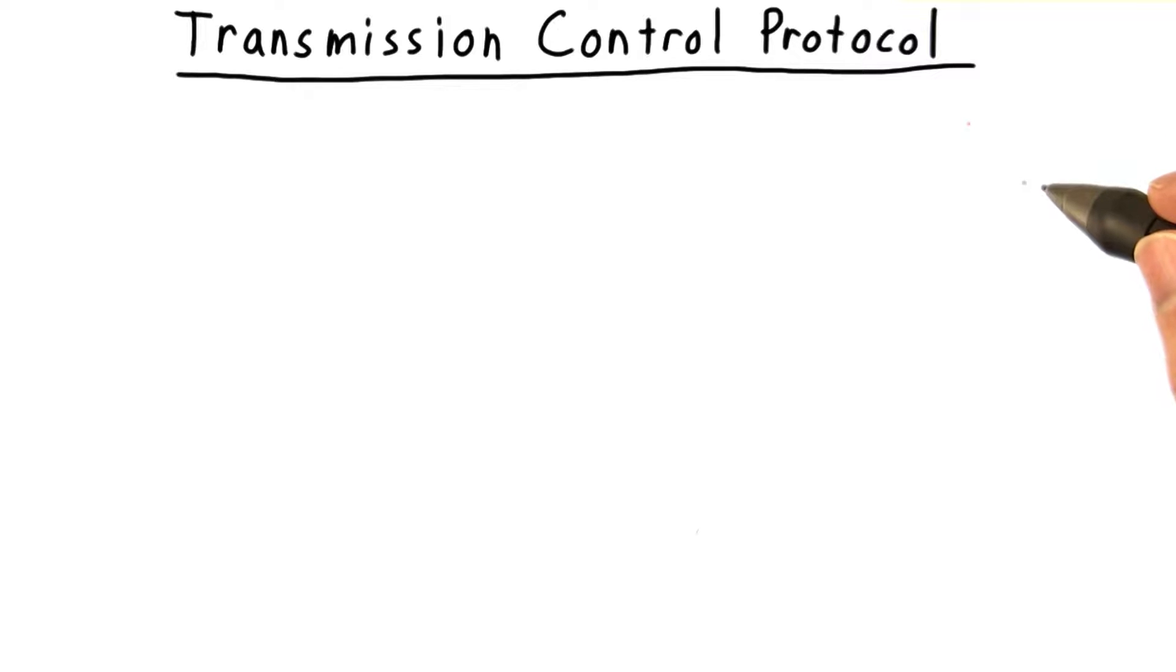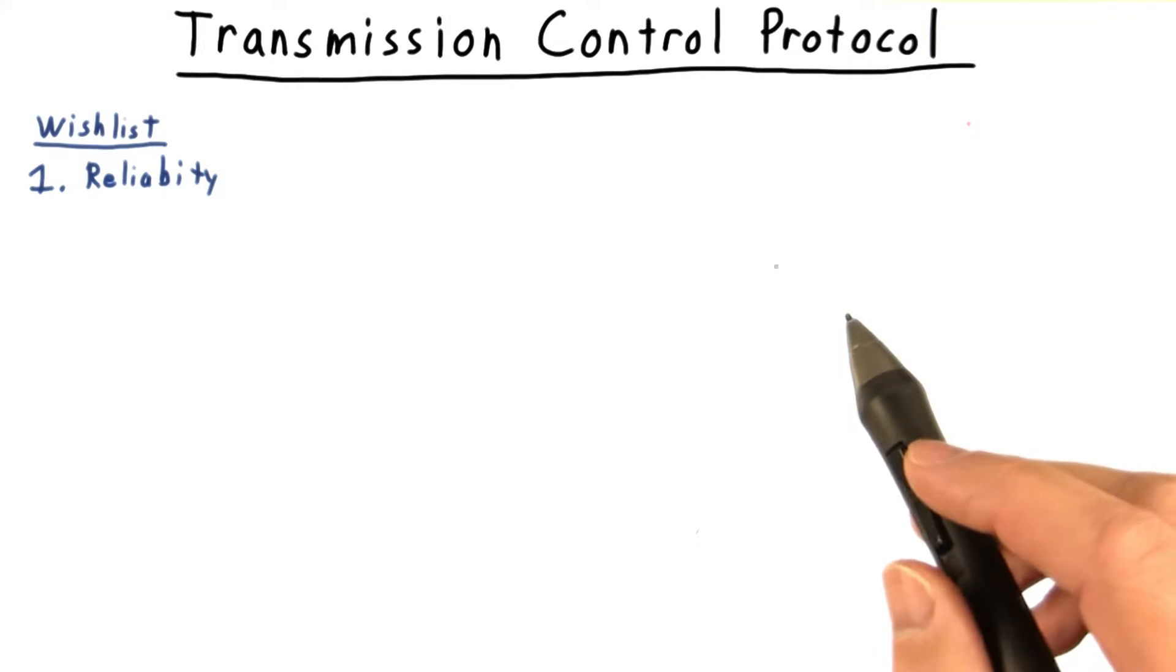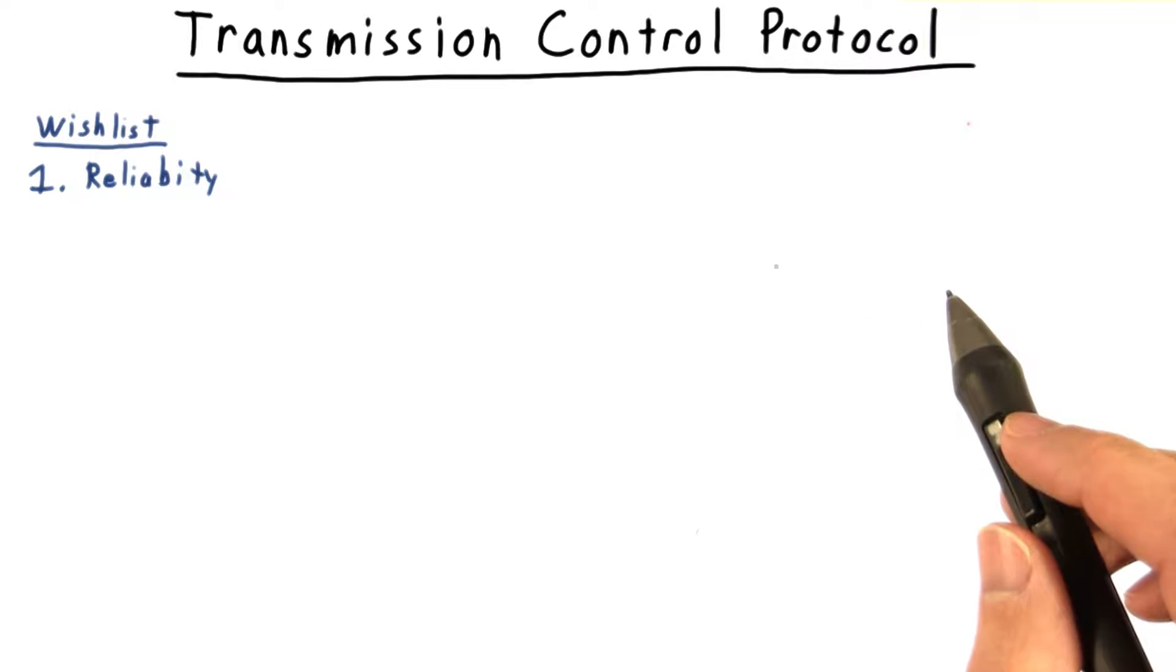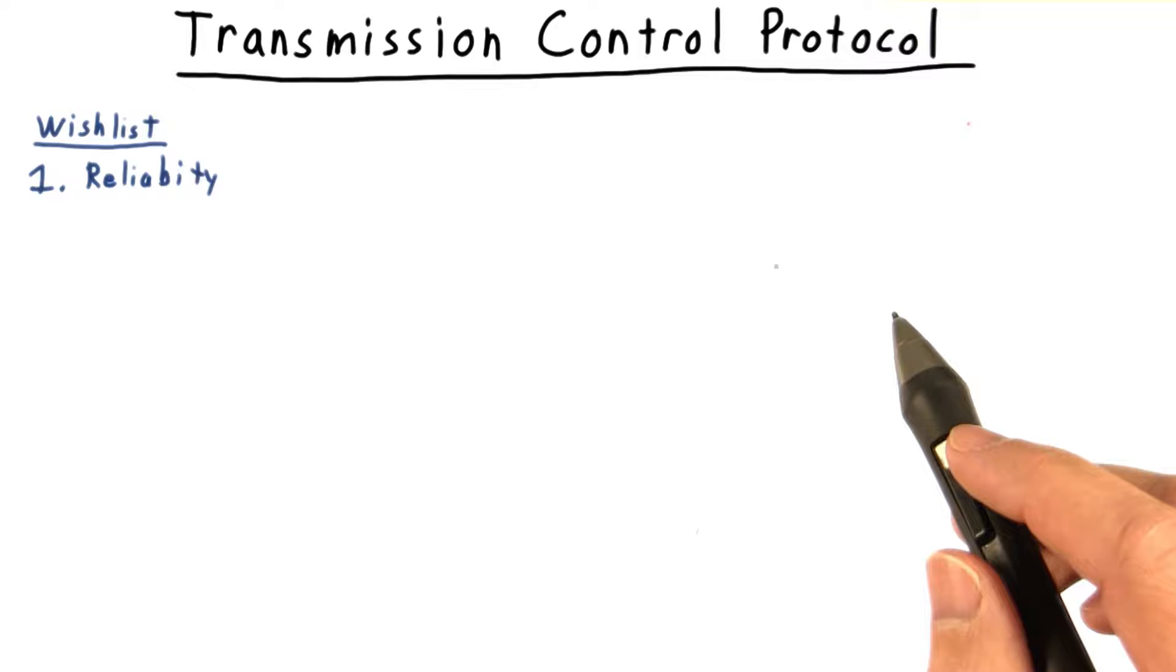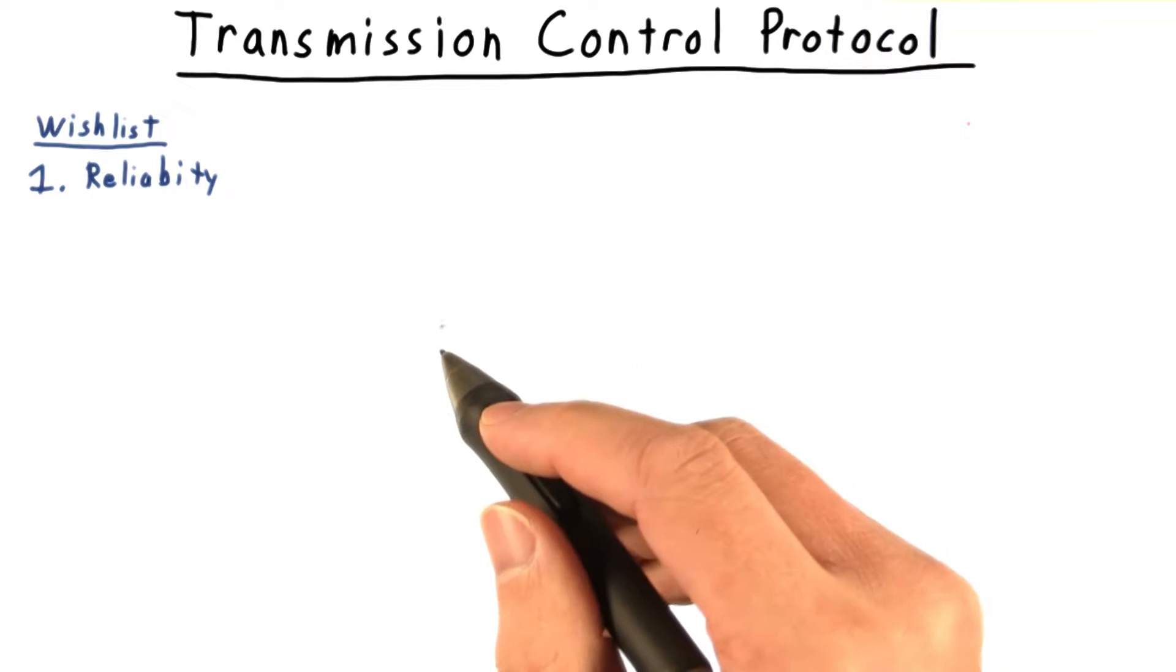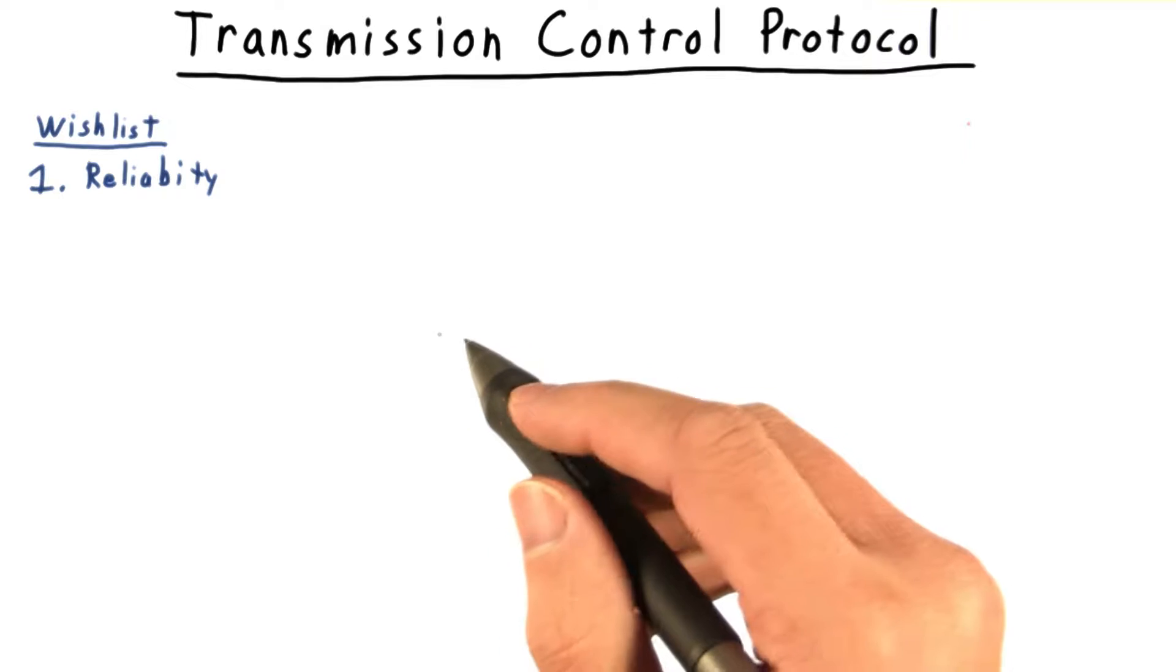Ports are an important addition to network communication, but if that were all the transport layer did, the application layer would be left to cope with some common problems. Given the terrific complexity and scale of the internet, it's no surprise that packets occasionally get lost or delivered out of order. It sure would be nice to have some kind of acknowledgement that the packet got through. That way we could resend a packet if necessary and achieve more reliable communication.